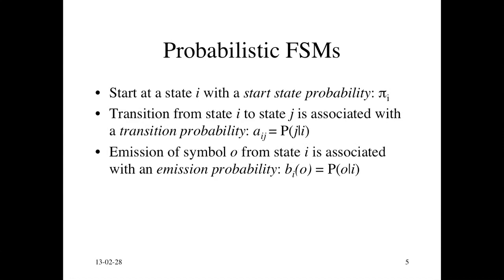The next thing is to generate a symbol, o, from state i. This is called the emission probability. This is written as b sub i, this function notation, b sub i of o.